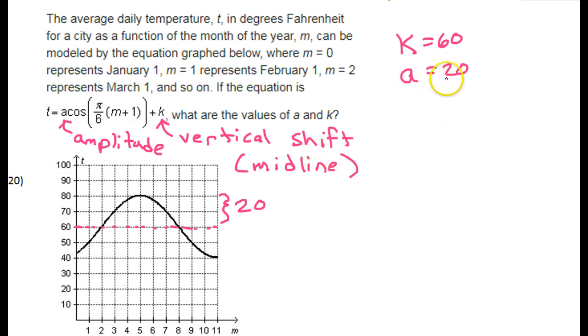Now, it's possible that it could be negative 20. So let me think about that for a second. Yeah, so cosine, a normal cosine function works like this.